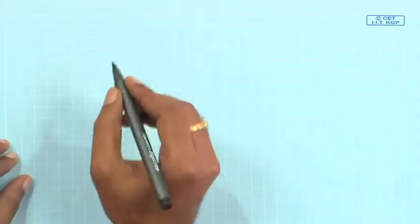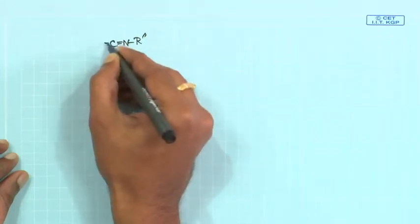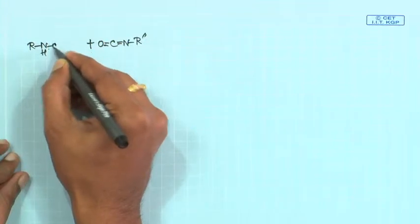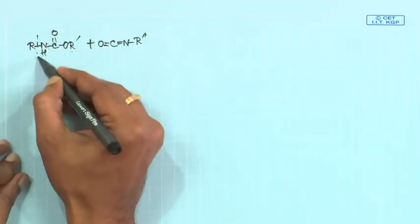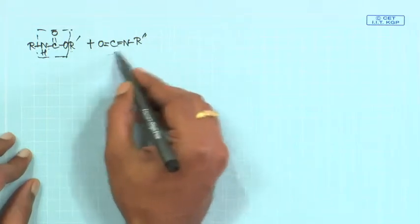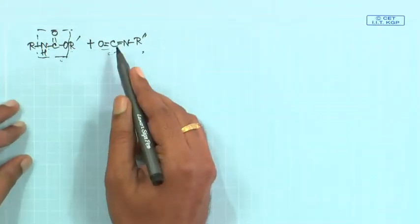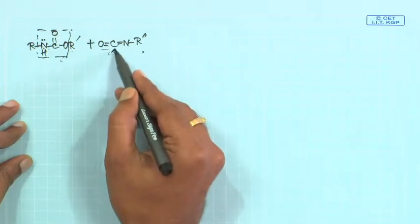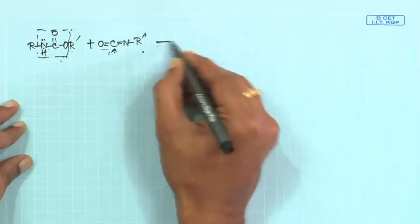Your isocyanate present in the system — say this is R double-prime with the isocyanate on one side — can actually react with your urethane linkage that has been produced. The isocyanate is one of the monomers, or it could also be at the end of a polymer chain, and that can react with your urethane linkage. Here there is a lone pair on the nitrogen of this urethane linkage that can attack on this carbon, which is electron-deficient. This reaction is reversible.